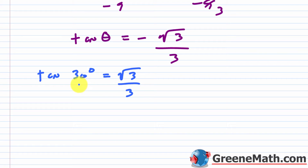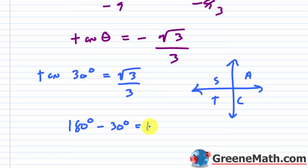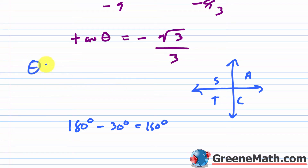Using special triangles: tangent of 30 degrees equals square root of 3 over 3. Tangent is negative in quadrants 2 and 4 (from the all-students-take-calculus mnemonic). In quadrant 2, a 30-degree reference angle gives 180 minus 30 equals 150 degrees. So tangent of 150 degrees equals negative square root of 3 over 3. Our first answer is theta equals 150 degrees, or 5 pi over 6 in radians.